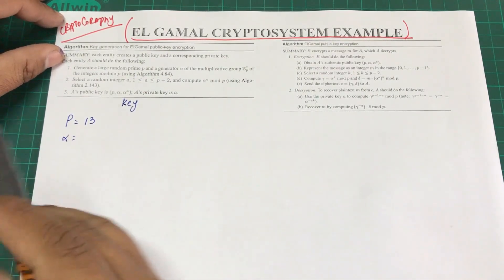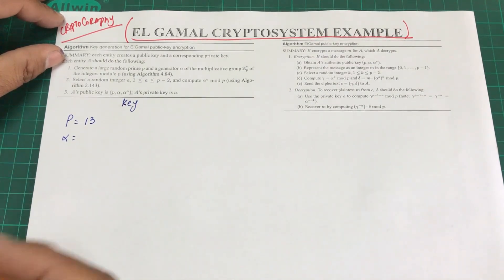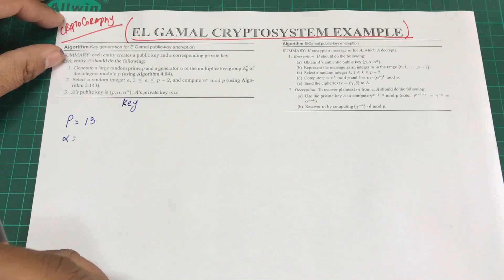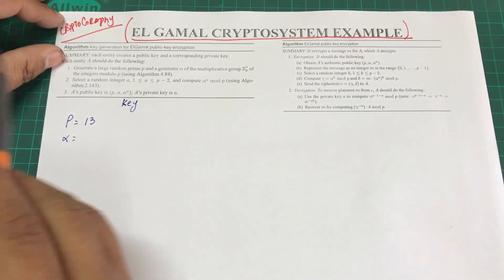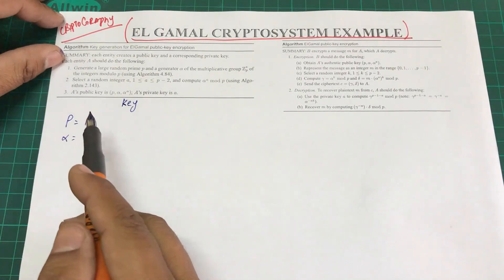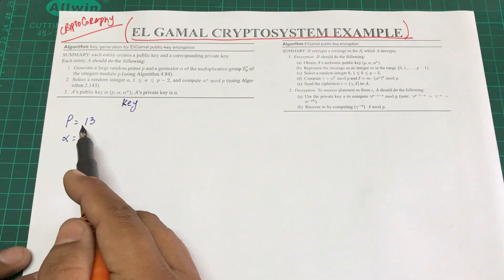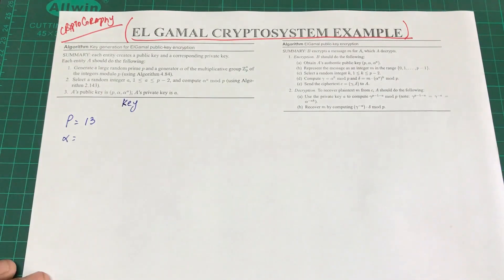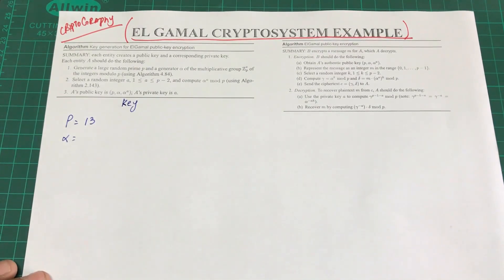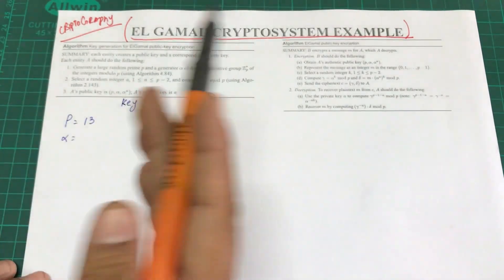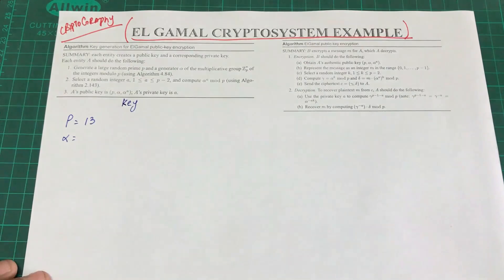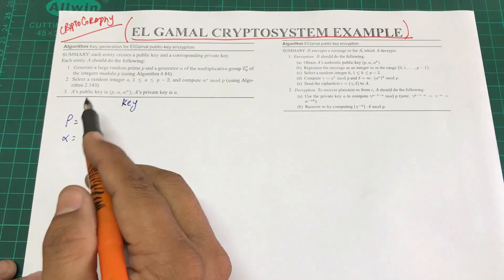A generator or primitive root is defined as a number that generates the entire number sequence from 1 up to the chosen modulus or prime number. For example, with p = 13, the generator will produce all numbers from 1 up to 12 in some order, and then the sequence repeats. I'll leave a link to the relevant video.